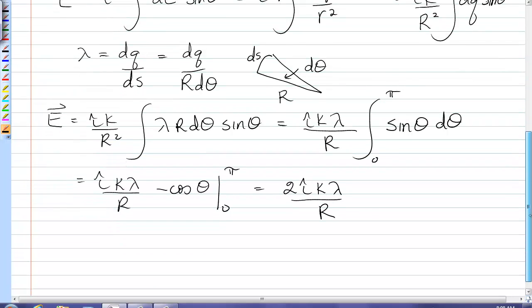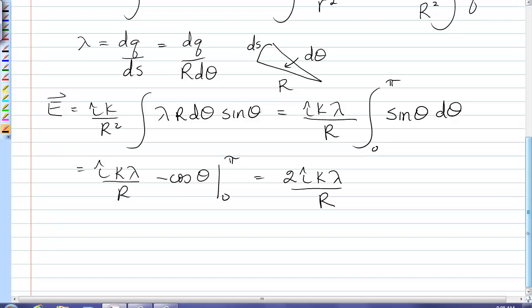Remember I can't leave lambda in there because I made that letter up myself. So lambda is equal to the total charge over the total length. And the total length of that semicircle would be pi R. So substituting that in for lambda I get 2 i hat k Q over pi R squared.